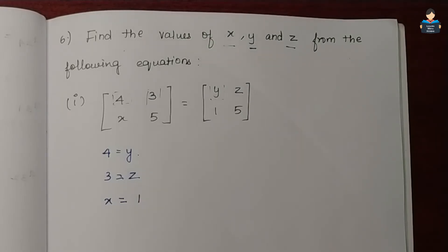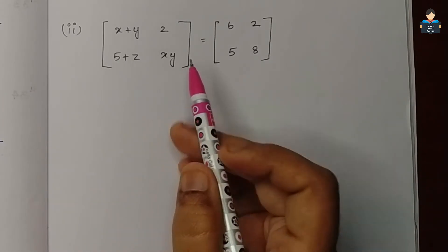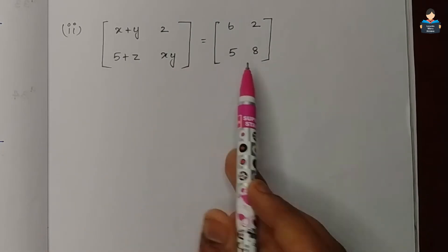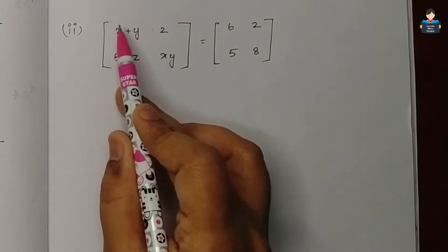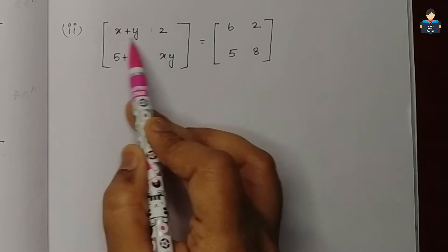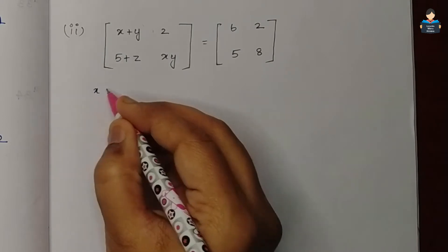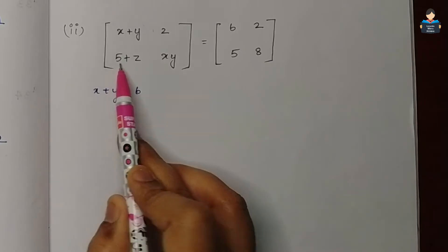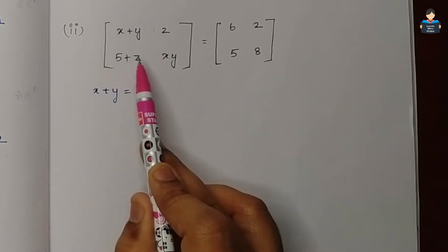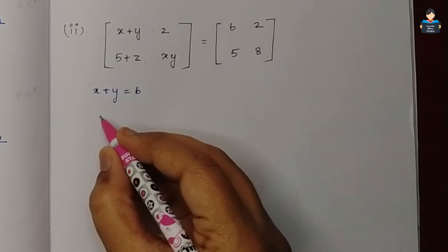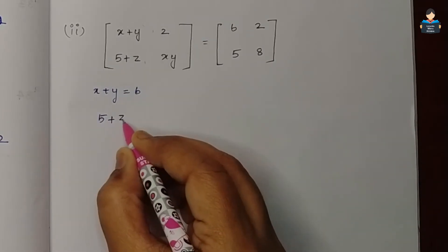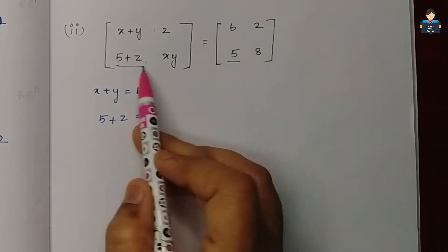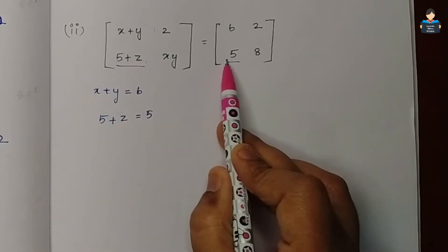Now for the second subdivision, we have a 2x2 matrix and two matrices set equal to each other. At position a11 we get x plus y is equal to 6. At position a21 we get 5 plus z is equal to 5.